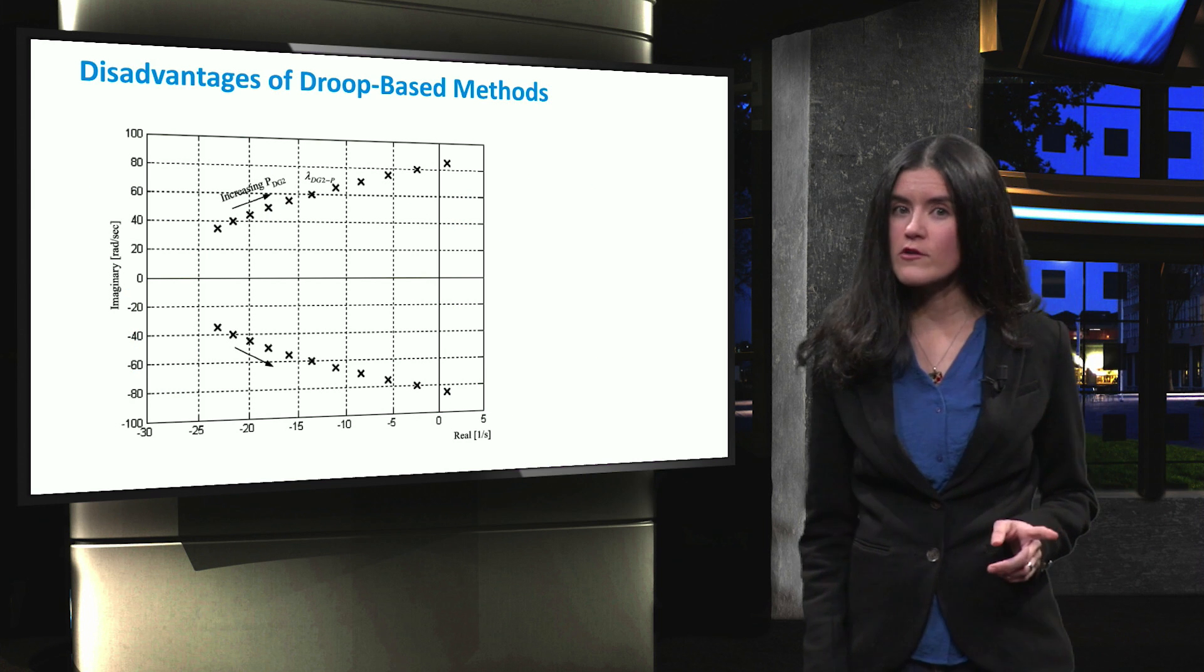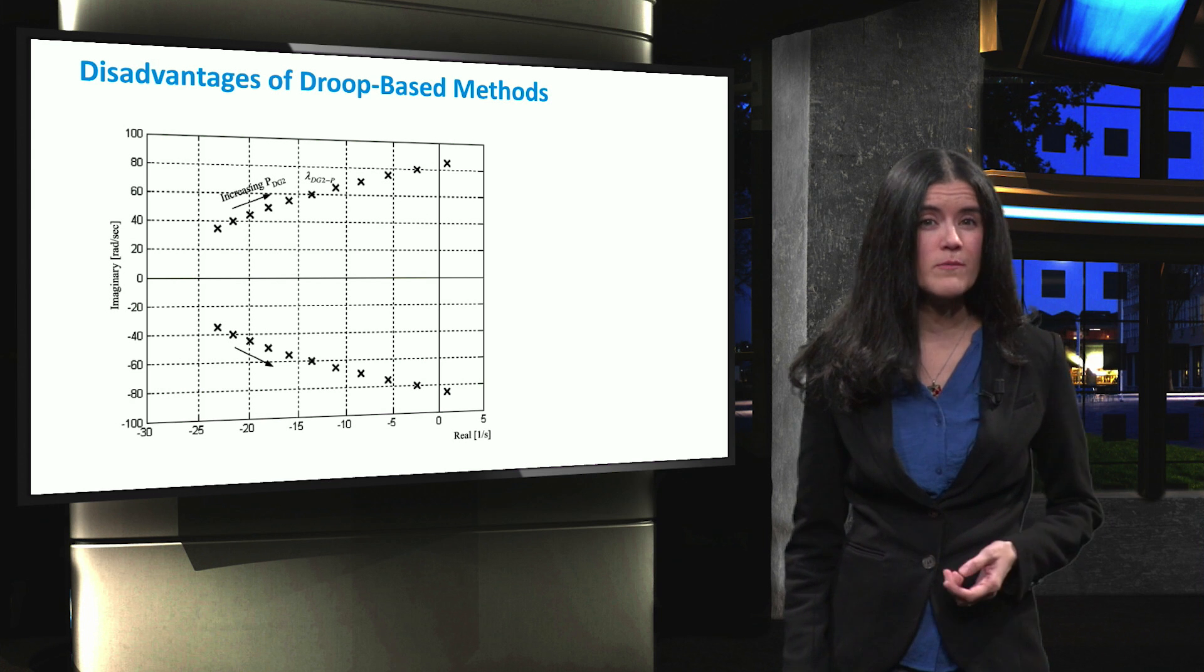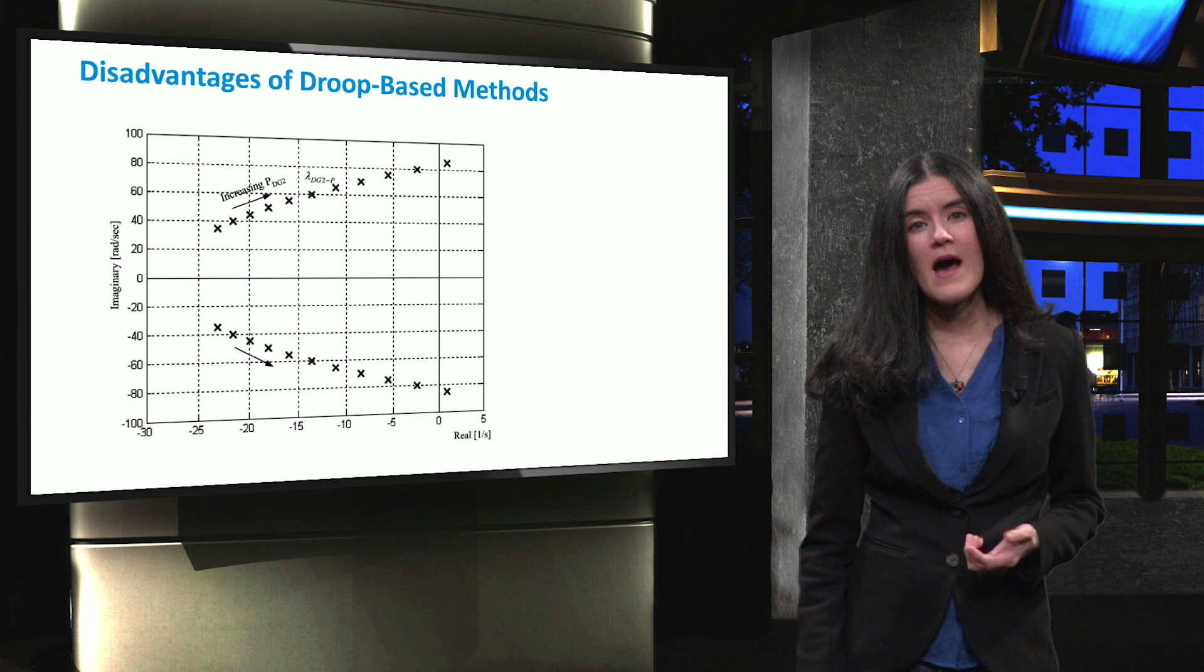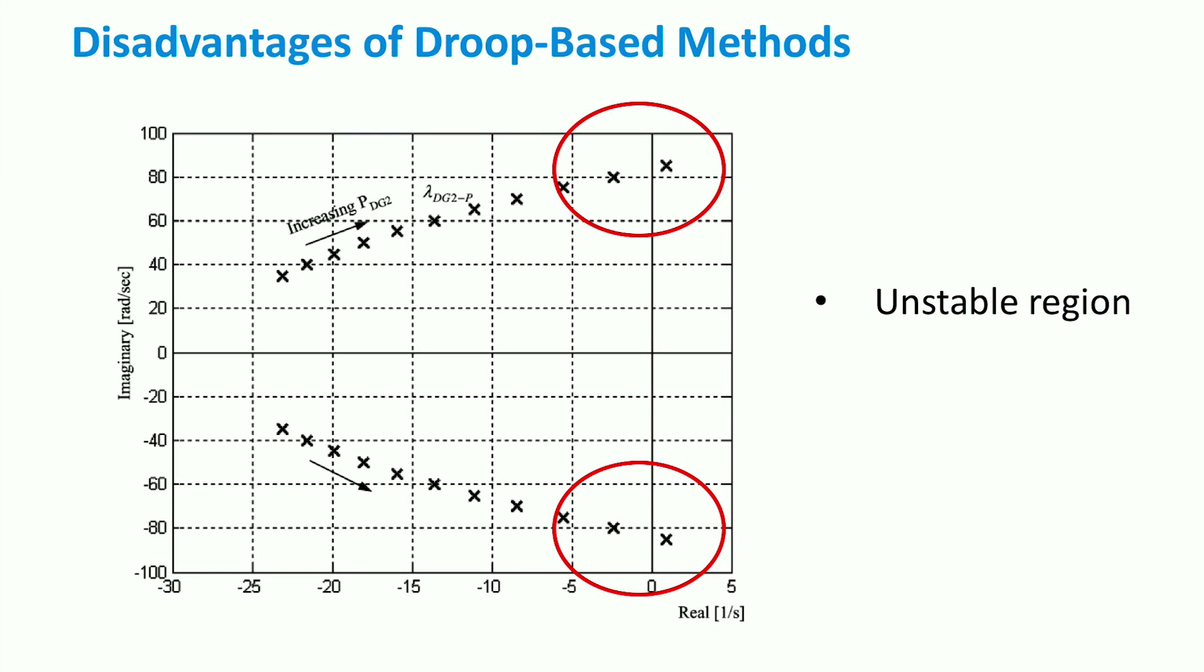It is important to note, however, that the implementation of non-communication-based droop control can pose several disadvantages. First, the droop control has a poor performance and may lead to frequency and voltage instabilities. In the graph, we can see that an increase in droop coefficients results in a lower real value and a higher imaginary value. The lower real value means that the converter is moving towards its unstable region, while the higher imaginary value translates into high frequency oscillations.